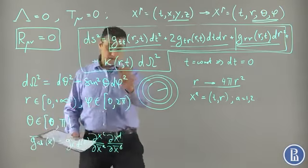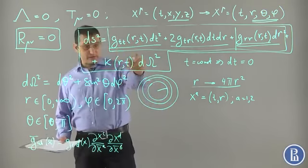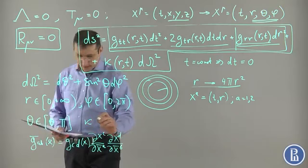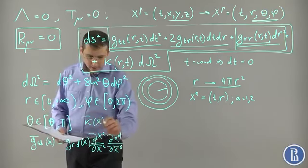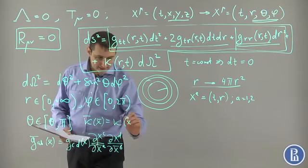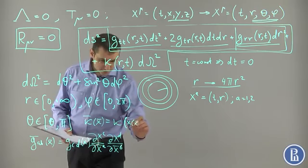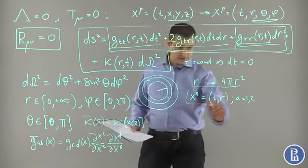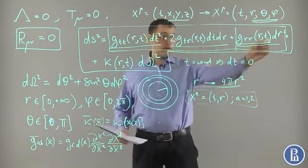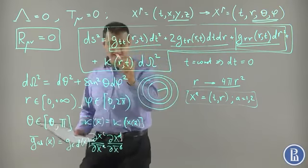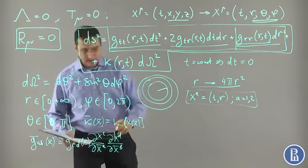At the same time, we can also transform this one. This one transforms as a scalar. So k bar of x bar is nothing but k of the function of x, which in its own right is a function of x bar. Under such transformations, this part of the metric transforms as a two-dimensional tensor with two indices, and this part of the metric transforms as a scalar.